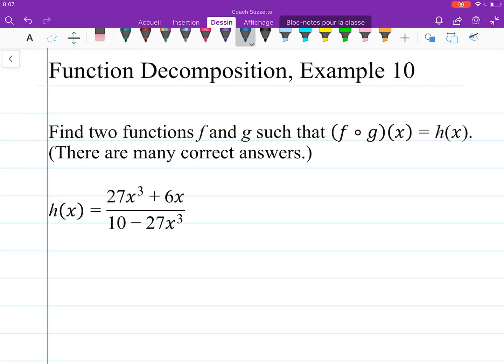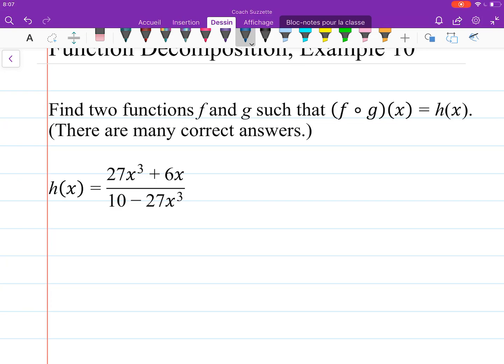Well, since we can find any two functions f and g, why don't we just go with something really easy? How about our inner function g of x be x and our outer function f of x be this? 27x cubed plus 6x divided by 10 minus 27x cubed.